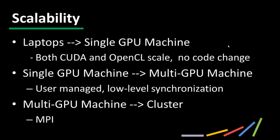The second feature is scalability, which can mean many things, so we've broken it into three kinds. From laptops to single GPU machines, both CUDA and OpenCL codes scale without any code change — a very common use case. We see nearly half of GPU computing users use a laptop at some stage of development and later move the code to a different hardware setup like a workstation or cluster. Both CUDA and OpenCL make life easy for this use case.